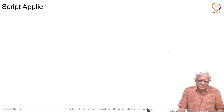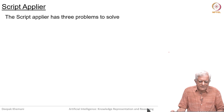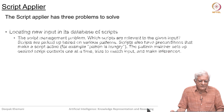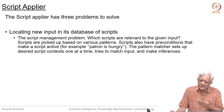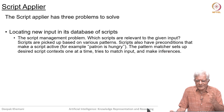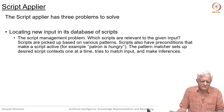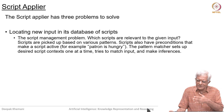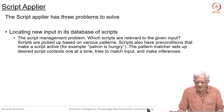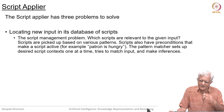The script applier is the program that takes over from PP memory, and it has three problems to solve. The first is locating new input in its database of scripts — the script applier has access to many scripts and must figure out which are likely needed to understand the input story. This is a script management problem: which scripts are relevant? Scripts are picked based on various patterns, and scripts also have headers and preconditions that make a script active. For example, 'patron is hungry' would trigger the cooking script or the restaurant script. The pattern matcher sets up the desired script context one at a time and tries to decide which of those scripts is actually applicable.